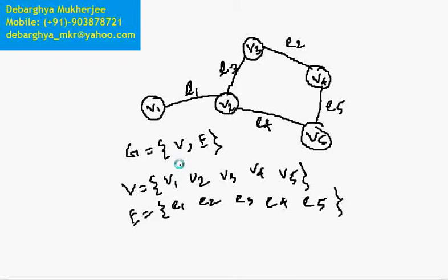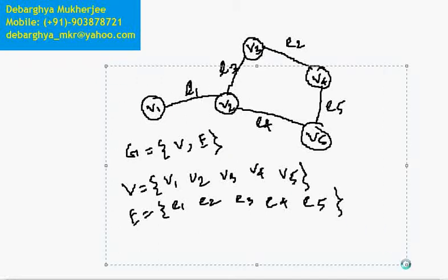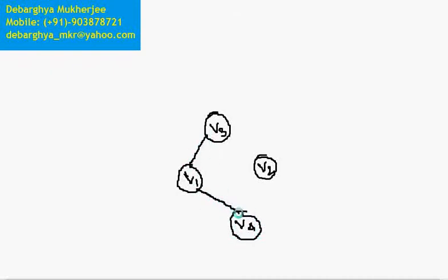A graph can be of two types: a directed graph or an undirected graph. Say we have a graph with vertices V1, V2, V3, and V4 — these are the vertices — and we have connectivity between them.